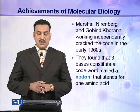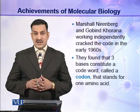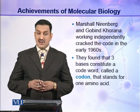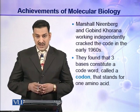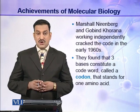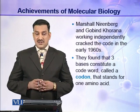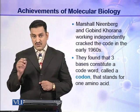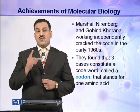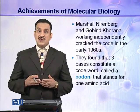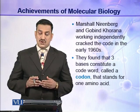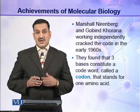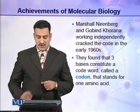The next important contribution was made by Marshall Nirenberg and Gobind Khorana. Working independently in the early 1960s, they cracked the genetic code. They found that three bases constitute a code word called a codon that stands for one amino acid. In this way, all the information for the synthesis of proteins containing 20 different types of amino acids is encoded in DNA as codons.